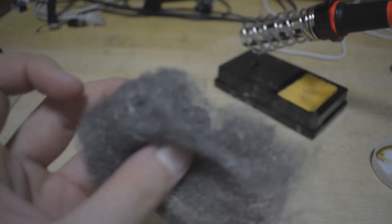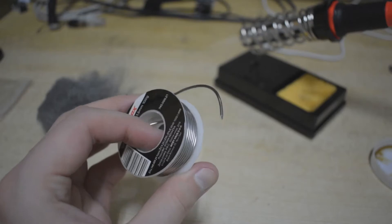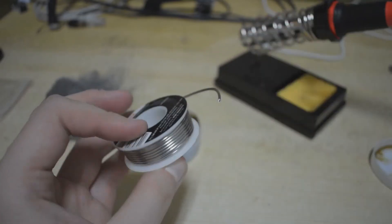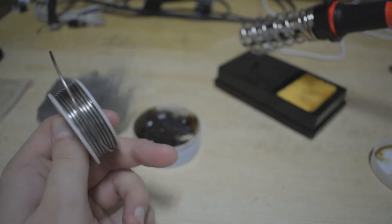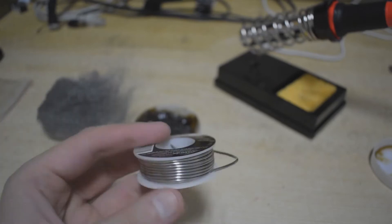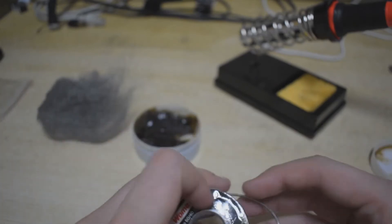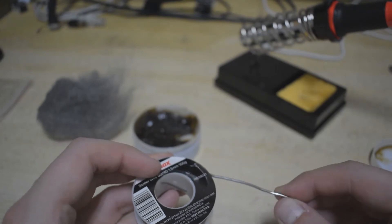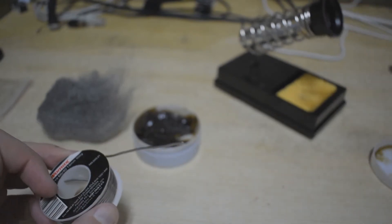You're going to need some steel wool in order to clean your tip. And one moment please, sorry, you're going to need some solder. Now this is quite a thick solder wire, but in my opinion it's one of the best and it's best for the job actually. It's not that expensive.